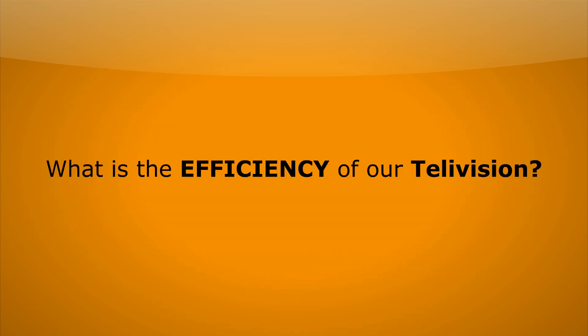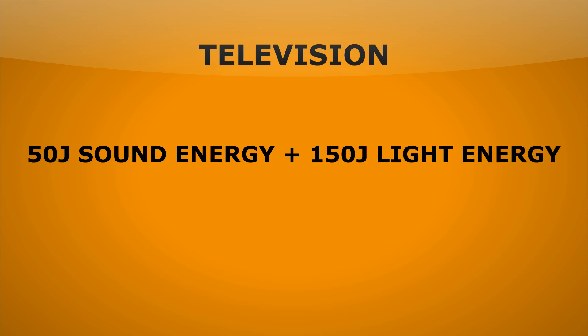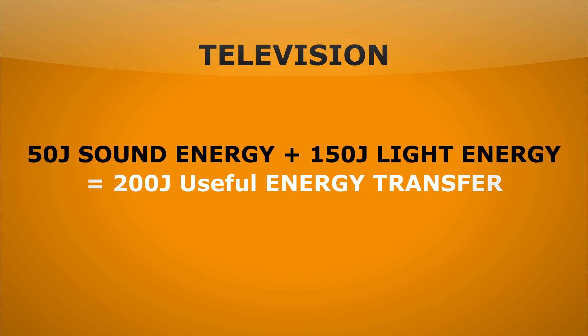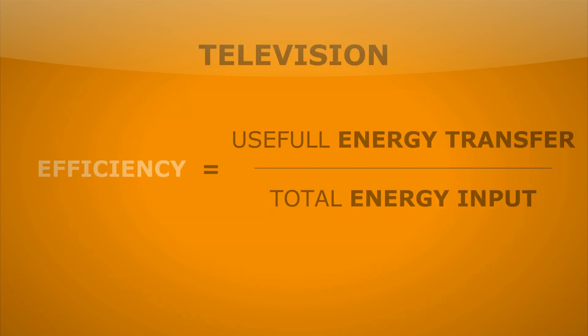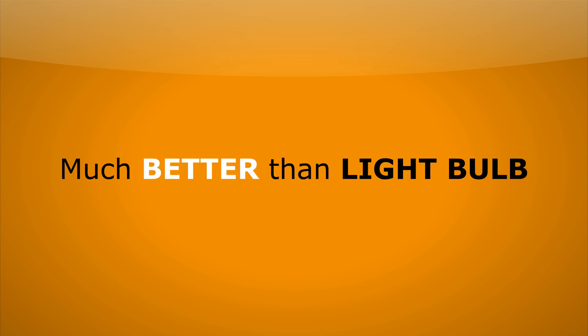So what's the efficiency of our television? We've got 50 joules transferred usefully as sound and 150 joules transferred usefully as light — so that's a total of 200 joules usefully transferred compared to our 250 joules going in. Let's put that in our efficiency equation: 200 divided by 250 gives us an efficiency for the television of 0.8. Much, much better than we had for the light bulb.